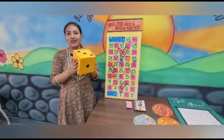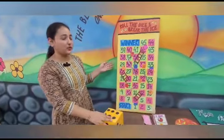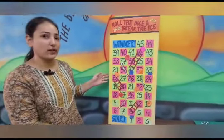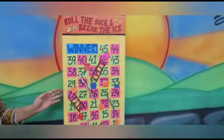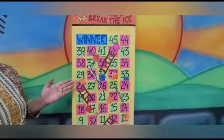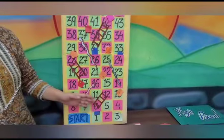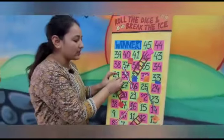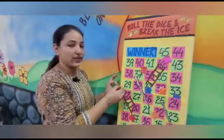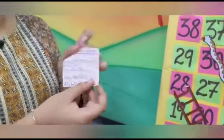Let's roll the dice and break the ice! This CLM is used to assess various topics in mathematics. Students play ludo as they normally would, and as they move further on the board, we can increase the difficulty level of the questions. For example, a student lands on number 29, opens the slip, and has to answer the question on it.